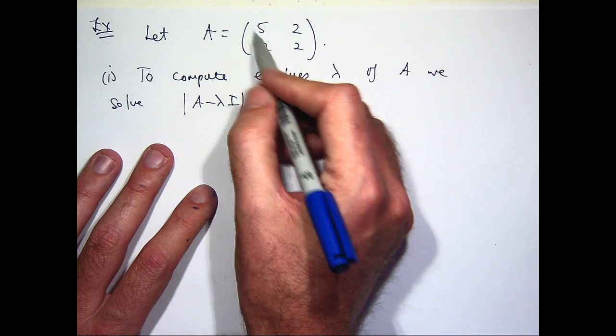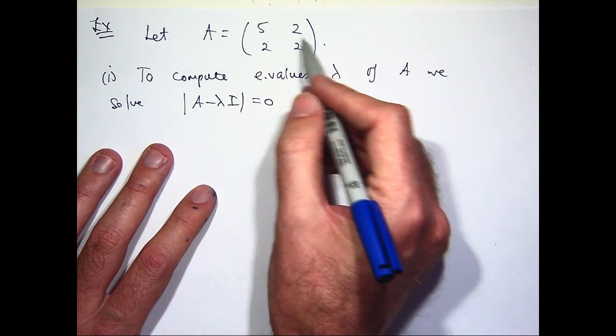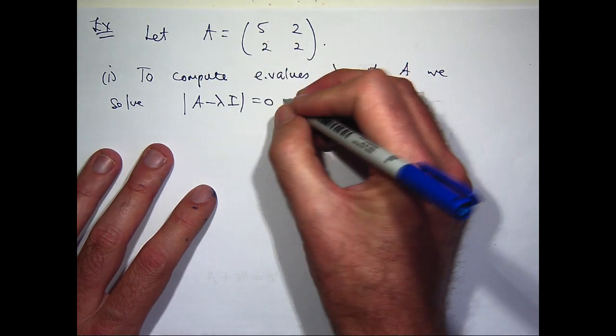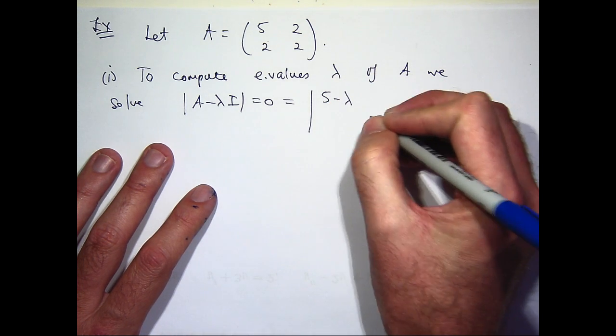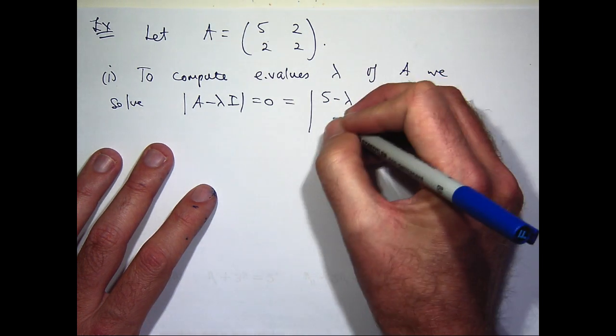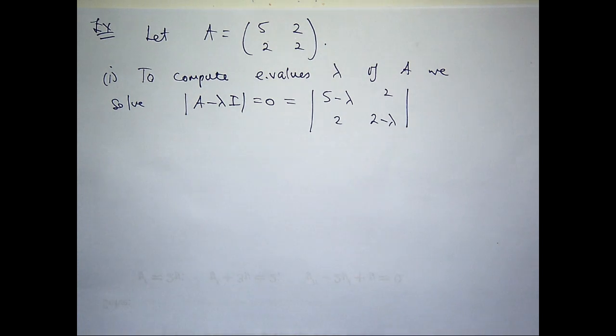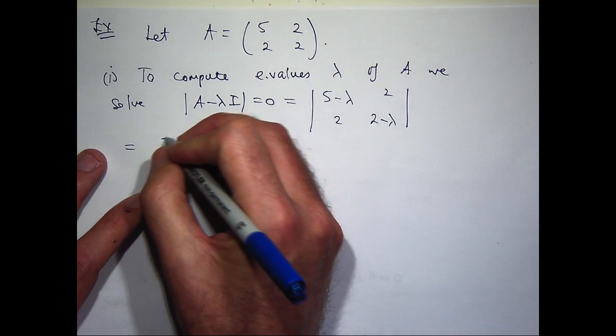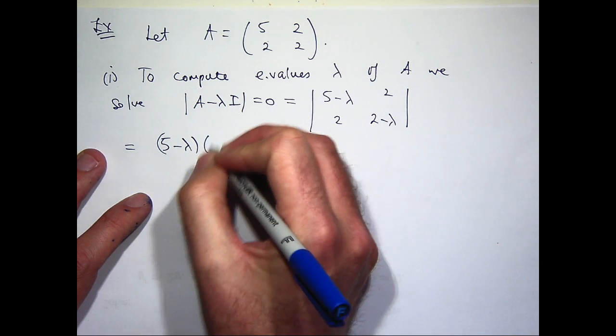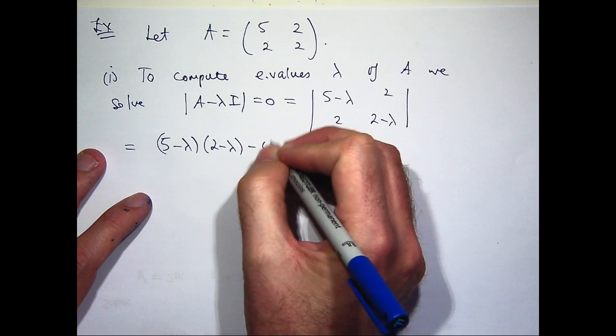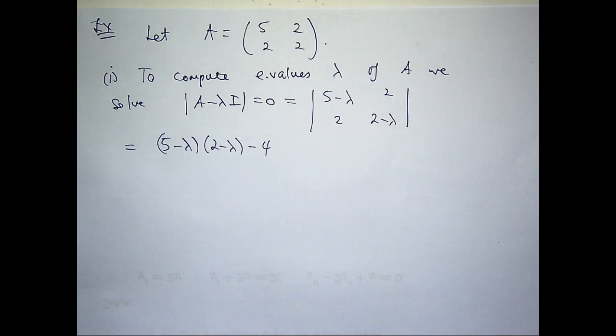Well, we'll get a five minus lambda there and a two minus lambda there. So I'll get the following. So it's a two by two determinant. It's this times this minus this times this.